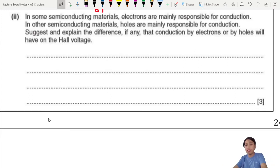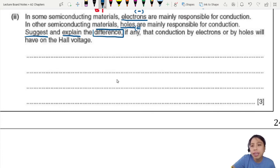Let's go on to the next part first. And we'll come back to this simulation. In the last part of this question, they say in some semiconducting materials, electrons are the one responsible for conduction. Electrons are the one carrying the current. They are the majority charge carriers. But in other semiconducting materials, holes are the main charge carriers here. Electrons are the negative charge carriers. Holes are the positive charge carriers. And they move around now. We can carry the current. So suggest and explain, double keyword. What are we trying to suggest and explain? The difference that conduction by electron or holes will have on the Hall voltage.